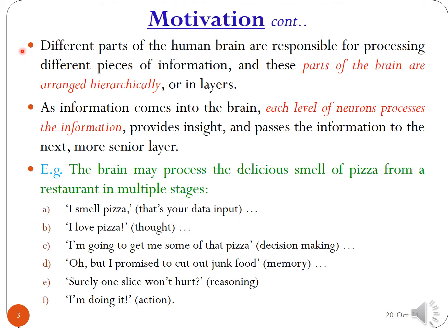Different parts of the human brain are responsible for processing different pieces of information, and these parts are arranged in a hierarchy or in layers. In our biological brain, each part is responsible for processing a different kind of information. As information enters the brain, each level of neurons processes the information, provides insight, and passes it to the next, more senior layer.